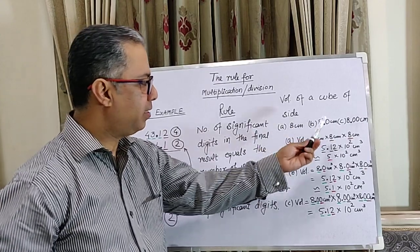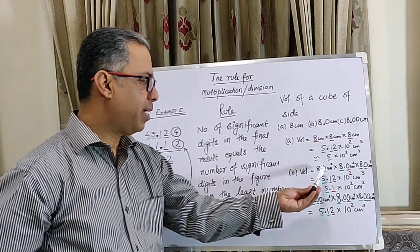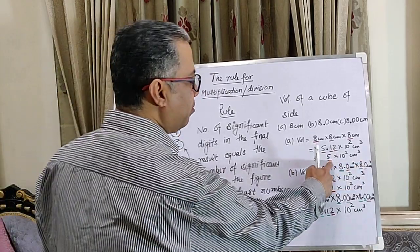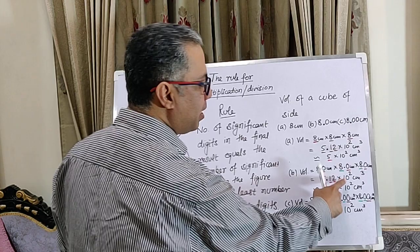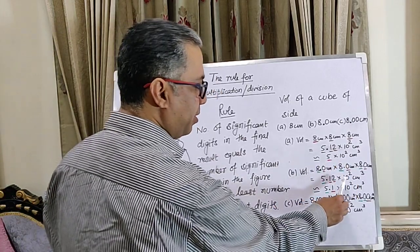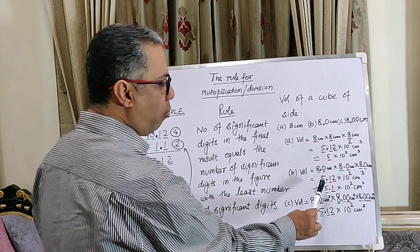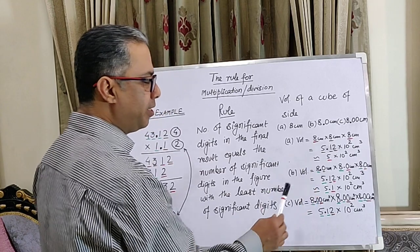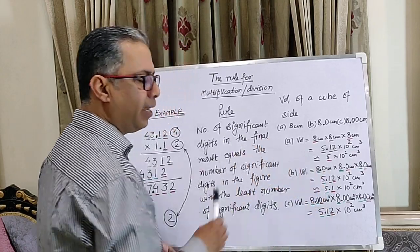In the second case, when we are calculating the volume of a cube of 8.0 cm, we multiply 8.0 cm × 8.0 cm × 8.0 cm and we end up with 5.12 × 10² cm³. This has three digits of which the last two are uncertain, and therefore we round off to one uncertain digit. Our final answer now has as many significant digits as the input figure.